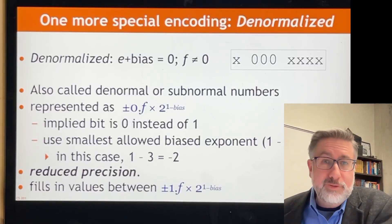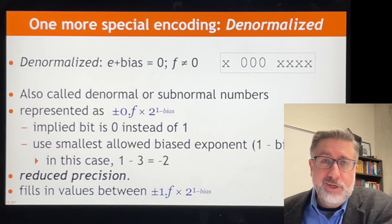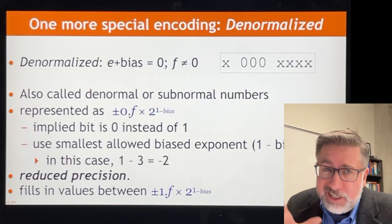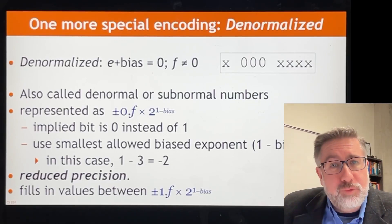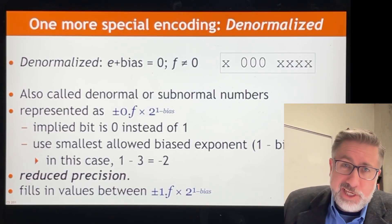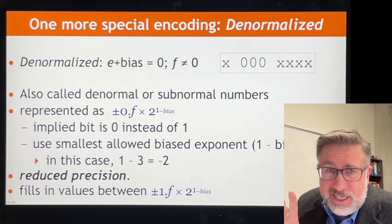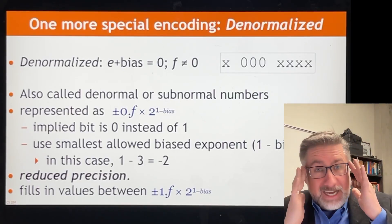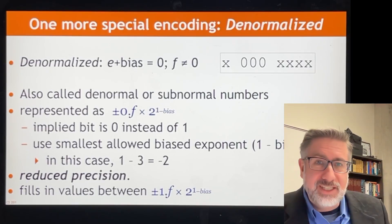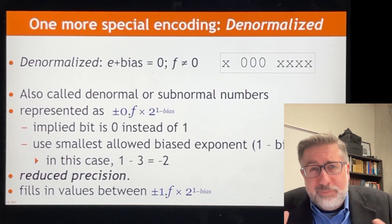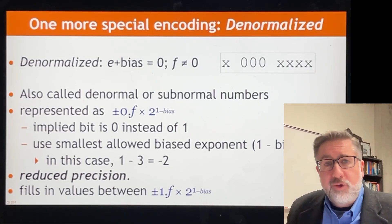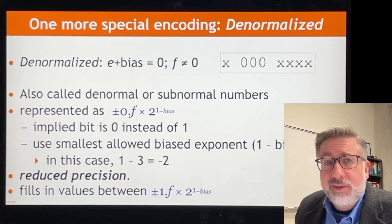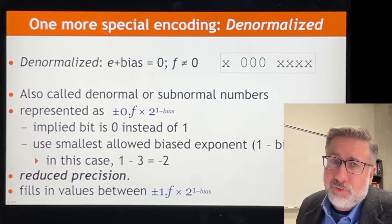We have had a conversation already about floating-point numbers and we are using a toy problem, a little 8-bit example of what the floating-point representation looks like. The first number is the sign, the second three numbers are the biased exponent, and the last four numbers are the normalized significand. The normalized significand is one point something times two to the something, and the something is stored in the biased exponent.